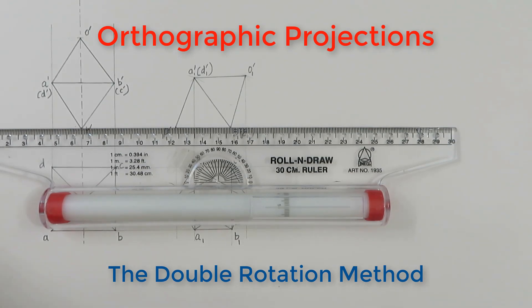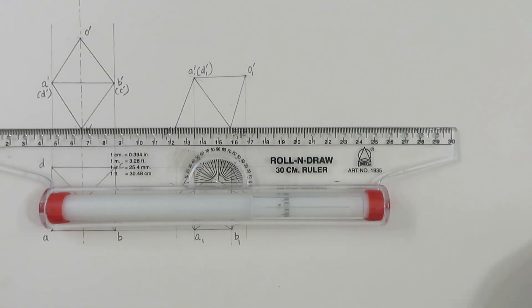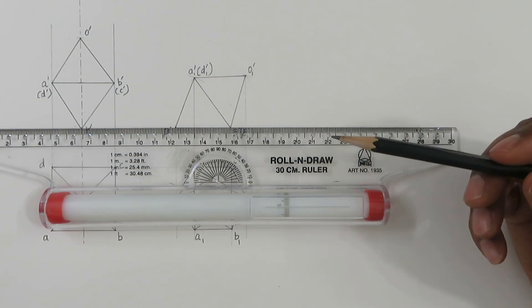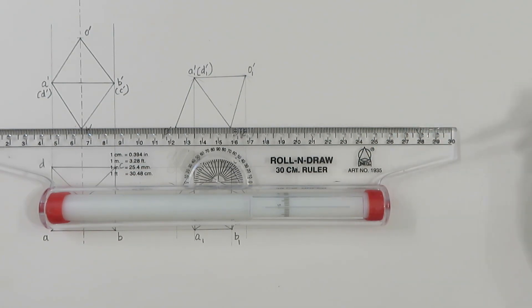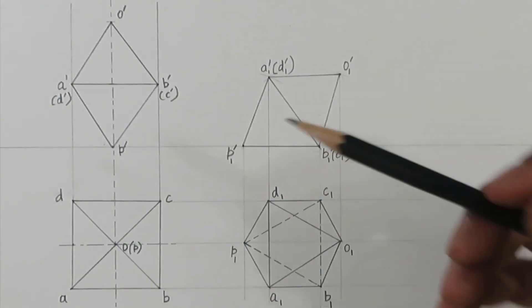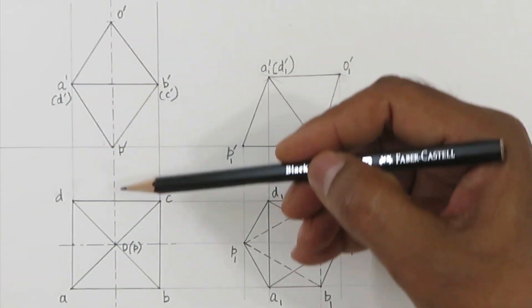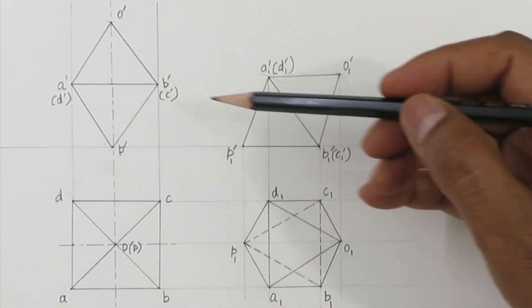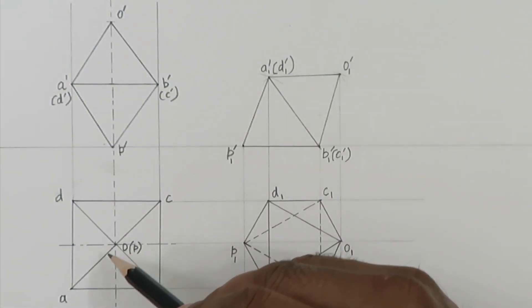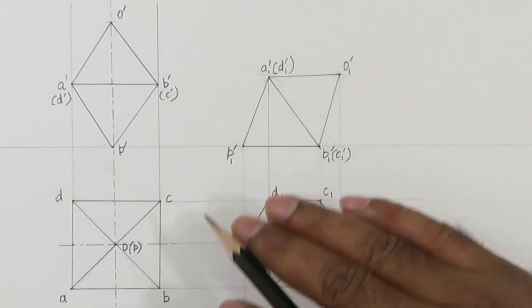Welcome back again. Today we will do an extension of the previous projection we did. The previous problem was: an octahedron is lying on the HP on one of its triangular faces such that one of the axes of the octahedron is parallel to the VP. We drew the first projection of the top view and the front view, and then we did the rotation such that one of the triangular faces, BCP, was on the HP.